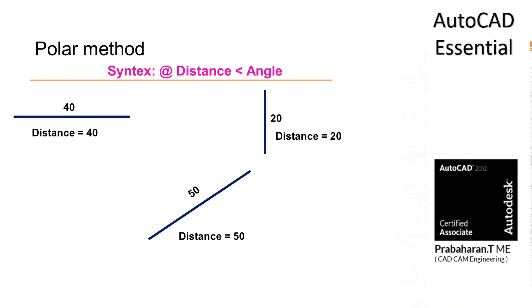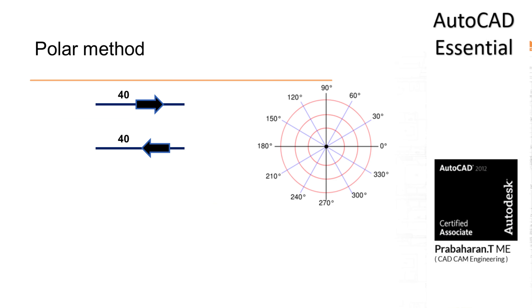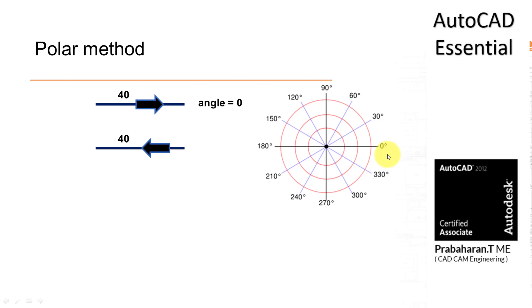If we have an inclined line, the line distance is the distance of the line. If you draw a line from left to right, that is the direction of positive x, so the angle is 0 degree. Similarly, if you draw right to left, that means we are moving towards 180 degree.